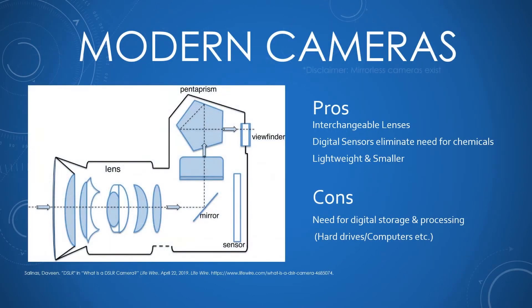Modern cameras function similarly to old cameras in that they have a lens and mirror, plus something called a pentaprism which bounces the light around to get it to your viewfinder right side up. When you take the picture, the mirror lifts up and light hits the sensor at the back of the camera. The pros of modern cameras include interchangeable lenses, digital sensors that eliminate the need for chemicals, and being lightweight and smaller. The cons include the need for digital storage and processing — if you don't have access to software and hardware to store and manage your photos, it becomes more challenging.